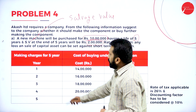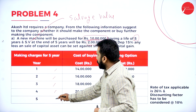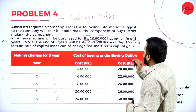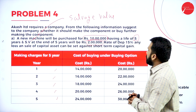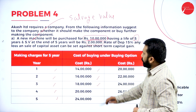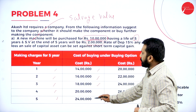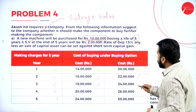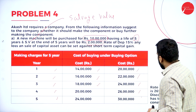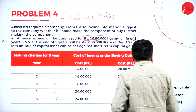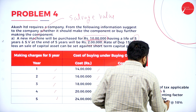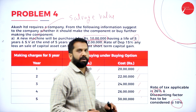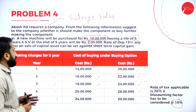Rate of depreciation is 15%. Any loss on sale of capital asset can be set against short-term capital gain. Number of years: 1, 2, 3, 4, 5. Cost of buying option: 14 lakhs, 16 lakhs, 18 lakhs, 20 lakhs, 24 lakhs. Cost of manufacturing: 20 lakhs, 22, 24, 26, 30. Rate of tax is 26% and PV factor (discount rate) is 10%. All the information is available.